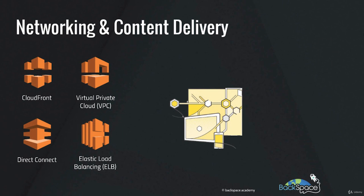Amazon Route 53 is a highly available and scalable domain name system, or DNS. It can handle traffic for your domain name and direct that traffic to your back-end web server.